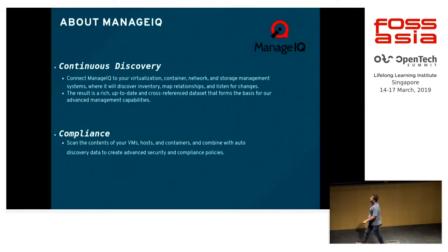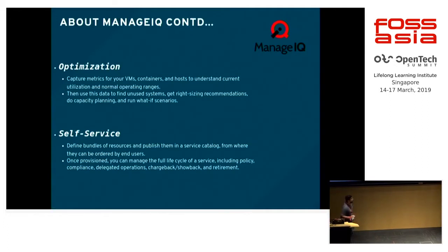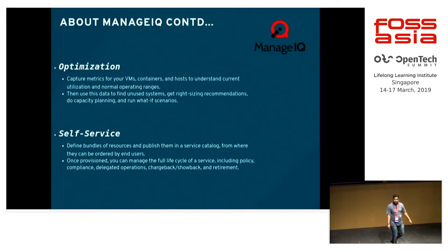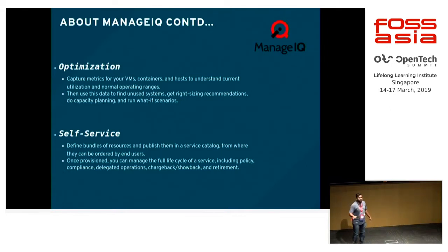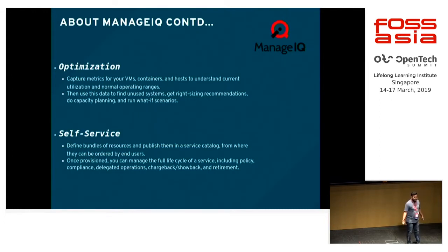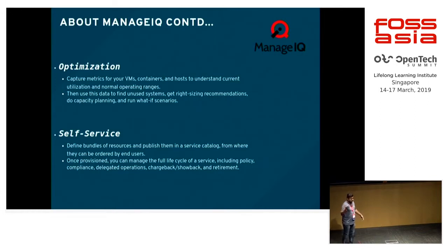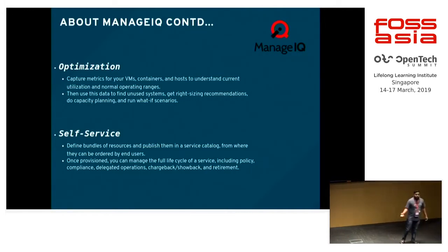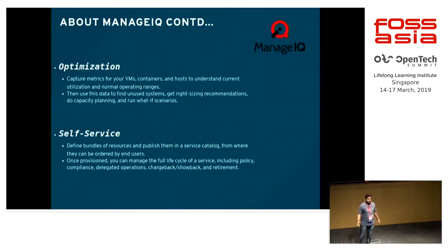Next is optimization and self-service. Optimization basically meters your resources. At the end, everybody is looking for the cost - whenever I am sharing resources to the end user, I'm looking for the cost. ManageIQ is open source and it gives you insights of usage. Like proprietary cloud services, it meters memory utilization, network utilization, and space utilization. Based on that, you can create your own chargeback reports and charge according to your needs.